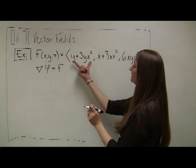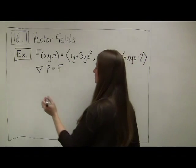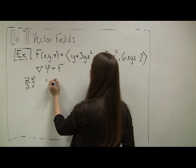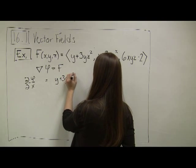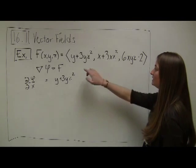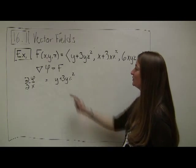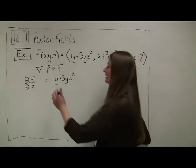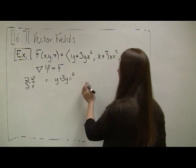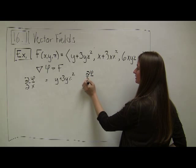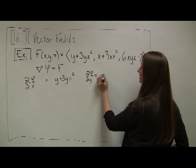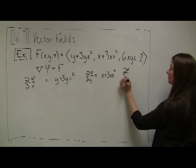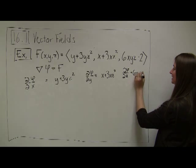Piece by piece, the gradient tells us that ∂φ/∂x equals y plus 3yz², ∂φ/∂y equals x plus 3xz², and ∂φ/∂z equals 6xyz minus 2.